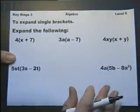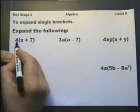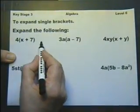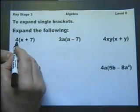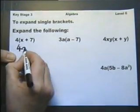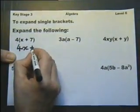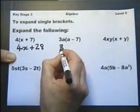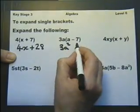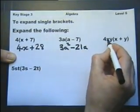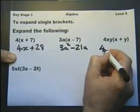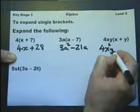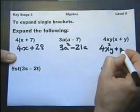Expanding single brackets. If you see a number or anything outside a bracket, it means multiplying everything inside by what's outside. So we go 4 times x, 4 times plus 7. 3a times a. 3a times minus 7. 4xy times x.